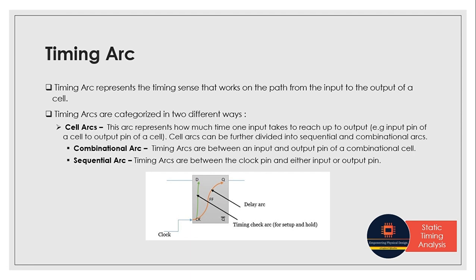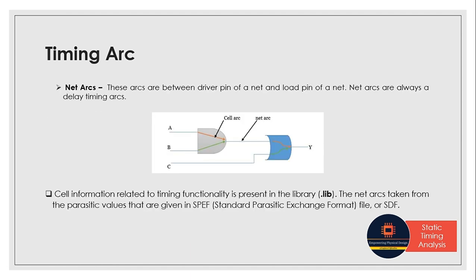For example, in a D flip-flop, clock-to-Q represents the delay arc — we check clock-to-Q for delay. The clock-to-D path is where we check for setup and hold time. That's why we call it a timing check arc.